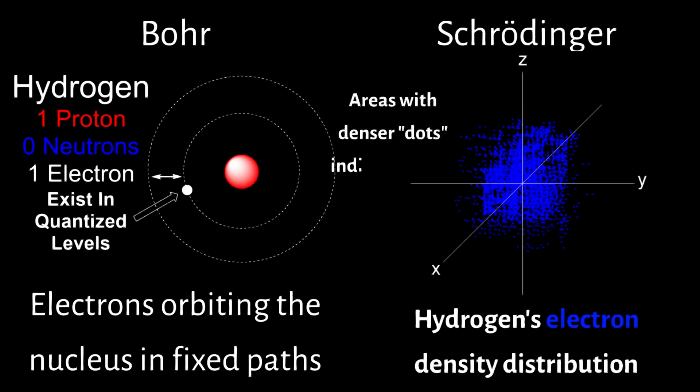In this model, areas with denser dots indicate higher probabilities of locating an electron, shifting from predicting exact locations to calculating likelihoods.